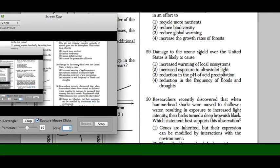Question 29: Damage to the ozone shield of the United States is likely to cause - the correct answer is increased exposure to ultraviolet light. The ozone protects us from ultraviolet light.